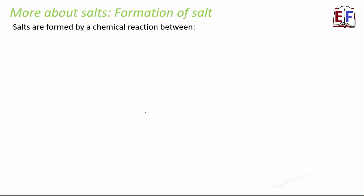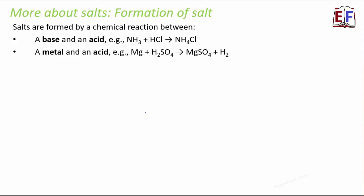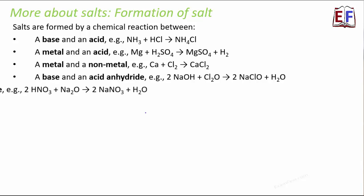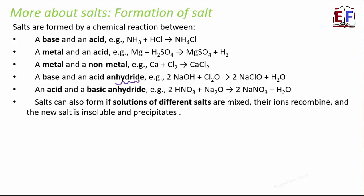Salts are formed by chemical reaction between a base and an acid, which is something that we always knew. Besides that, a metal and an acid, just like magnesium plus H2SO4 forms MgSO4 plus H2, or a metal and a non-metal like calcium and chlorine combine together to form calcium chloride, or a base and an acid anhydride or an acid and a basic anhydride. A lot of you might be wondering, what do we mean by anhydride? Anhydride basically is obtained by elimination of H2O. When you remove H2O from an acid, it becomes acid anhydride. When you remove H2O from a base, it becomes basic anhydride. With all of these reactions, the end product is a salt.